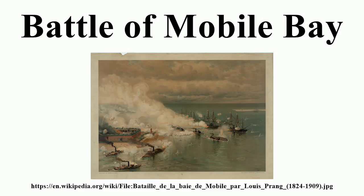This was followed by a reduction of the Confederate fleet to a single vessel, the ironclad CSS Tennessee. Tennessee did not then retire, but engaged the entire Union fleet. Tennessee's armor enabled her to inflict more injury than she received, but she could not overcome the imbalance in numbers. She was eventually reduced to a motionless hulk and surrendered, ending the battle.